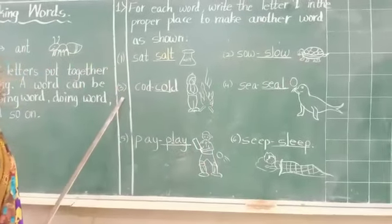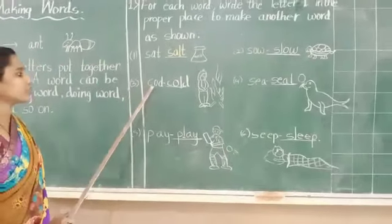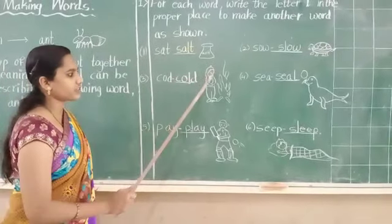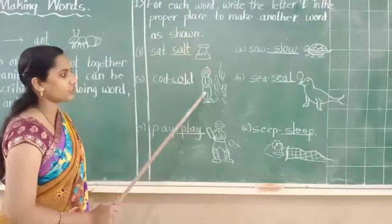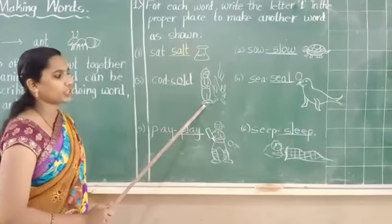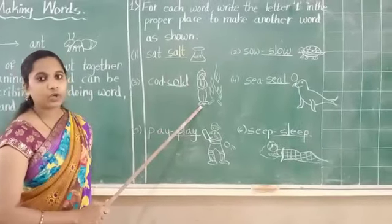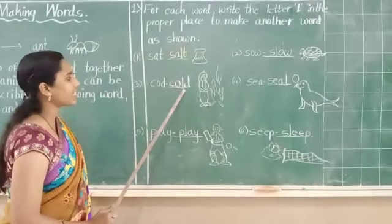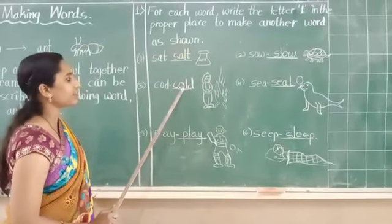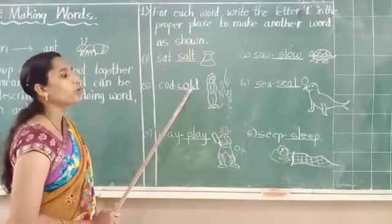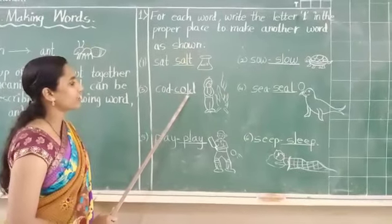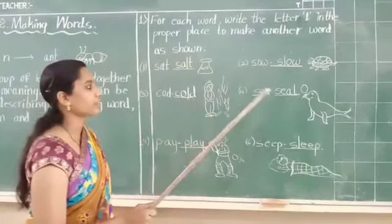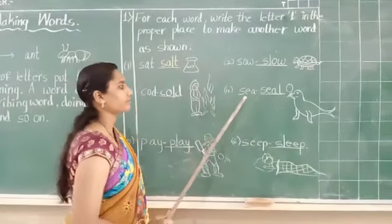Third one. C-O-D. What is this picture? This boy is feeling very cold. We should add L here after O — it will become C-O-L-D, cold.